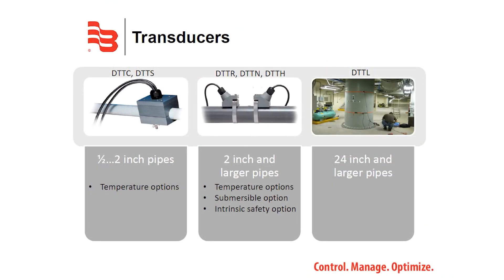The TFX line offers several transducer styles to fit your application requirements. The DTTC and DTTS transducers are designed for small pipe sizes from one-half inch to two inches and offer temperature measurement options. The DTTR, DTTN, and DTTH are designed for two-inch pipes and larger, offering temperature, submersibility, and intrinsic safety options. Finally, the DTTL transducer is reserved for pipe sizes 24 inches and larger. Transducers come in a wide variety of cable and conduit options.